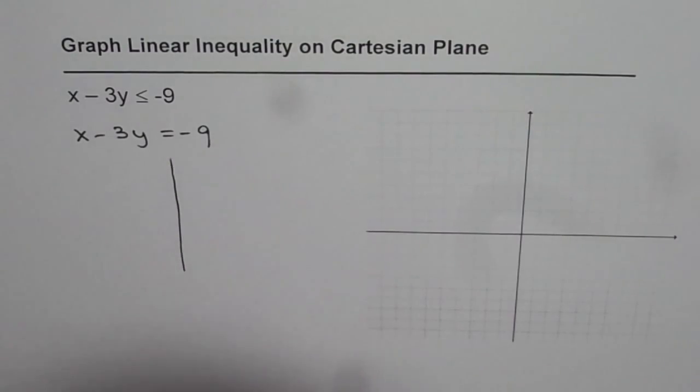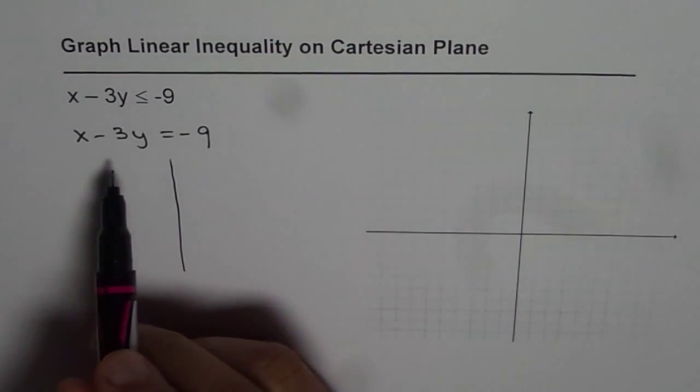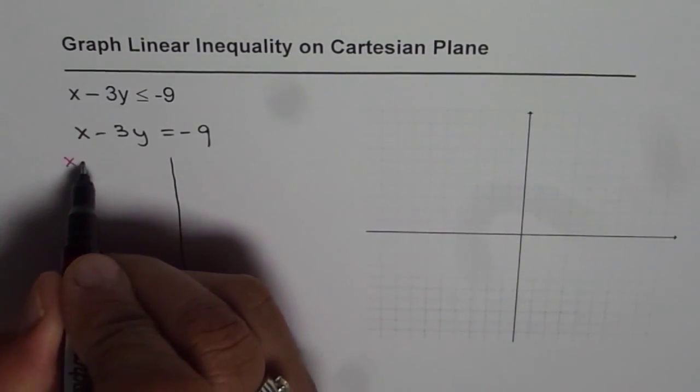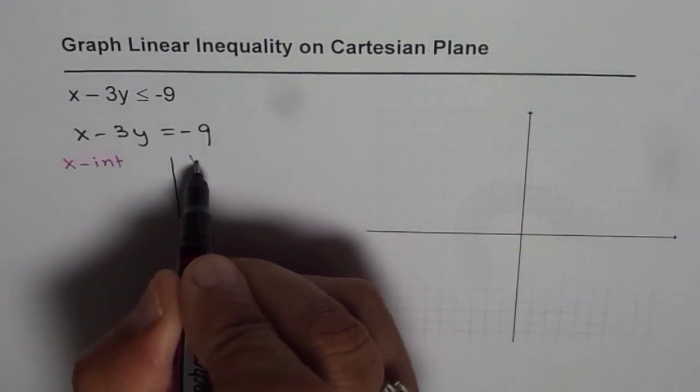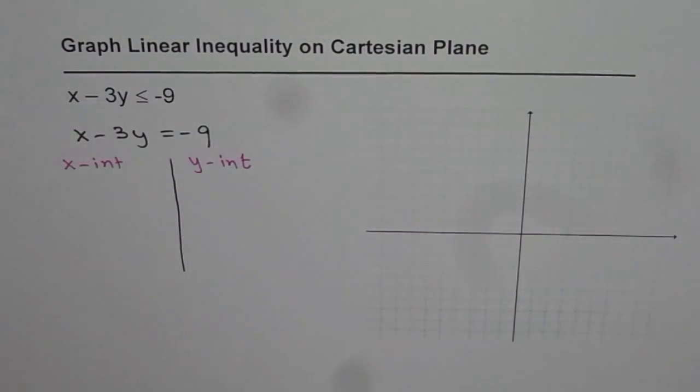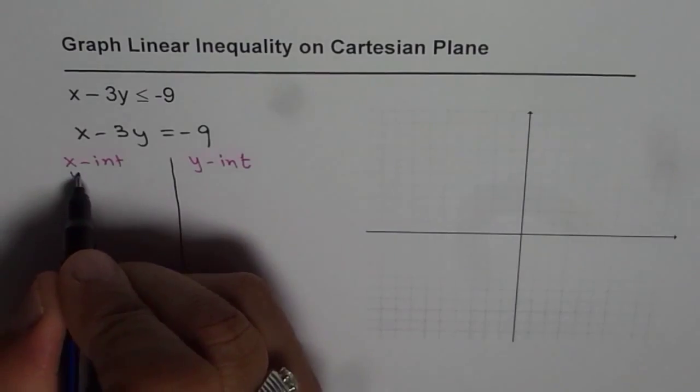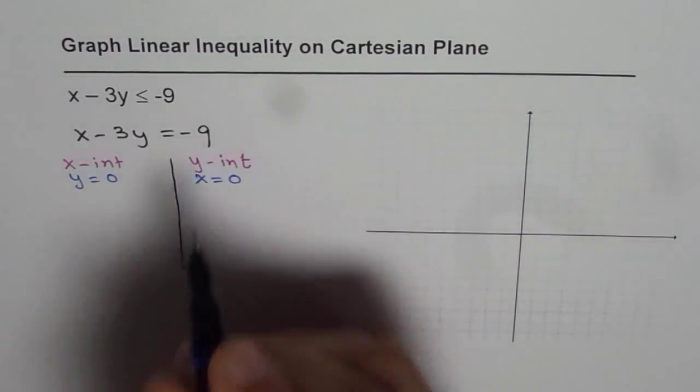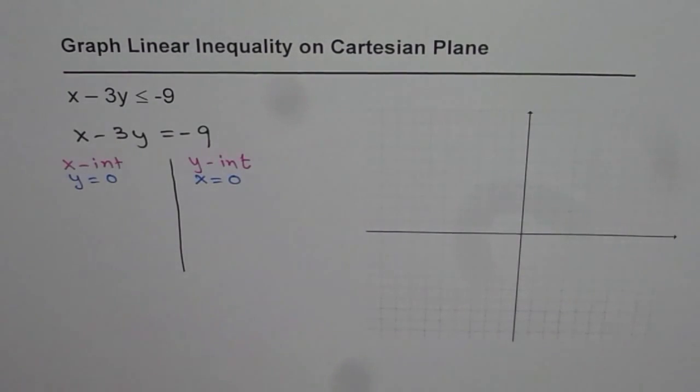To sketch this line, we need to find x and y intercepts. That's probably the best method when given in standard form. X intercept means y = 0, y intercept means x = 0.